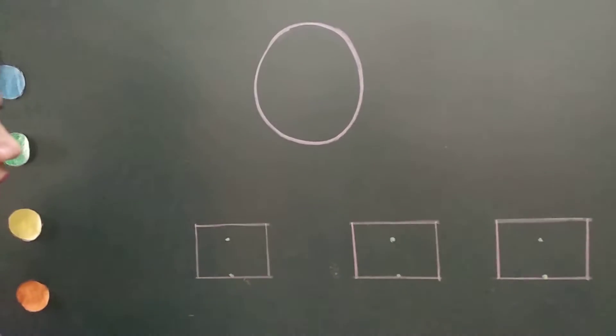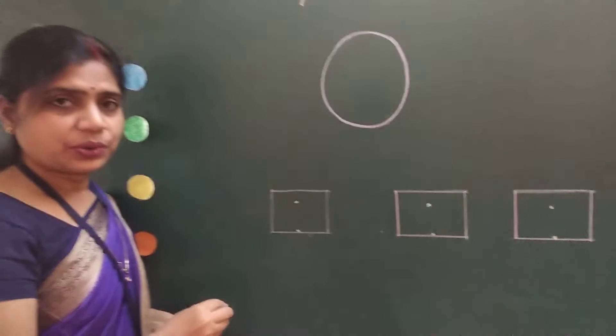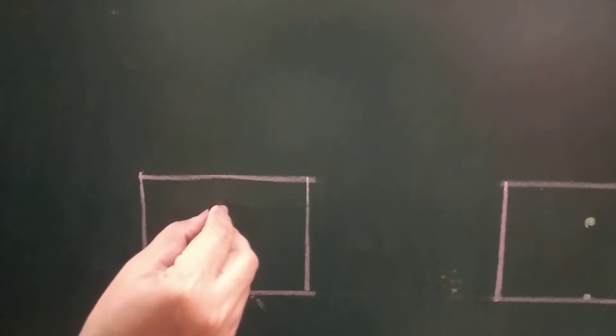Now, I will tell you how we write 0. See here, two dots are here. So, we join these dots in this way.